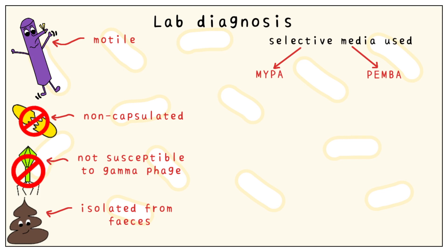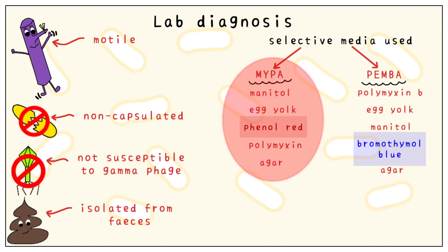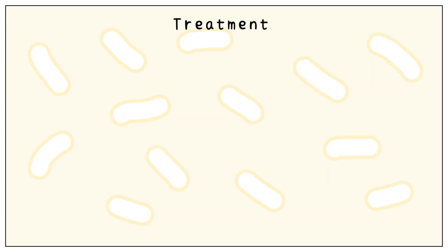These are easy to remember — they are simply abbreviations. Both contain mannitol, egg yolk, polymyxin, and agar. The only difference is the presence of phenol red in MYPA and bromothymol blue in PEMBA. Remember them as the red plus blue media, which gives us a purple Bacillus cereus.